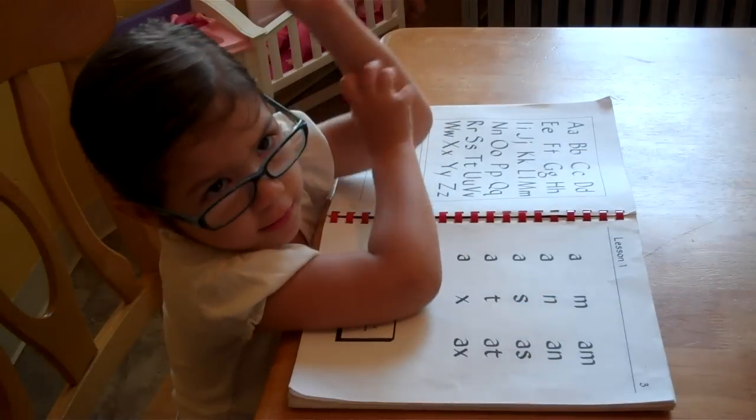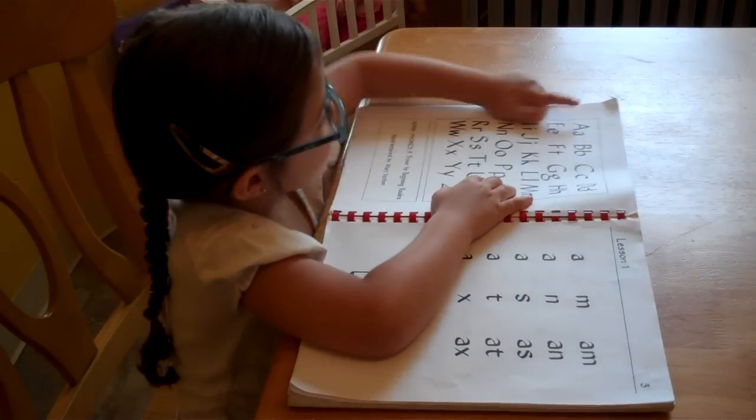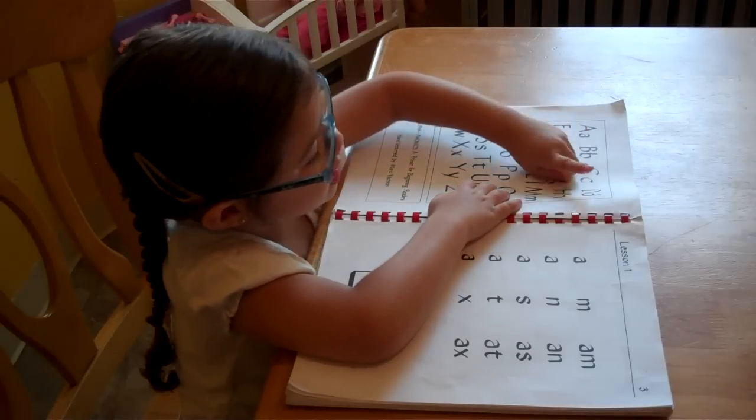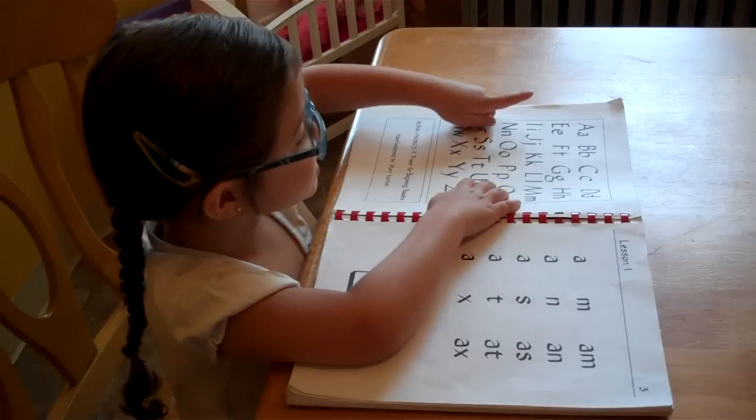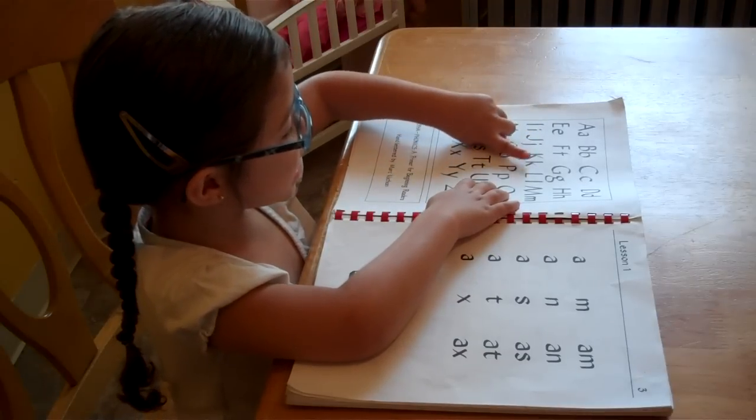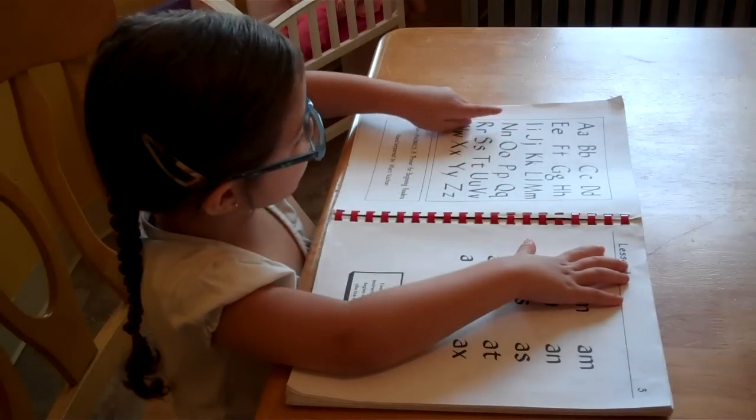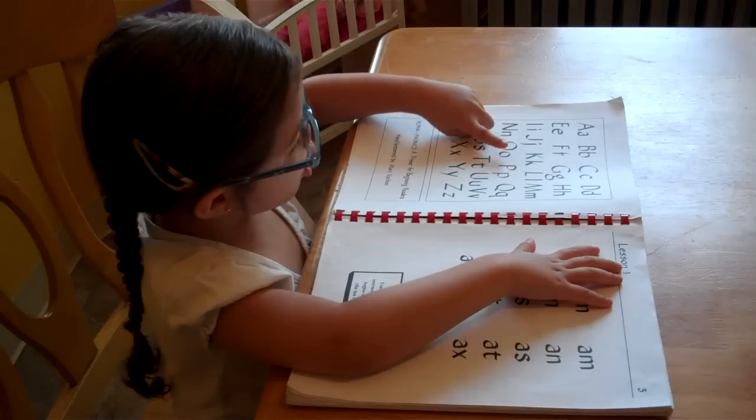A. B. Wait. Do the sounds. I'm trying to scratch. Oh, you're trying to scratch. Okay. A. B. C. D. E. F. G. H. L. L. I. I. J. K. L. N. N. N.